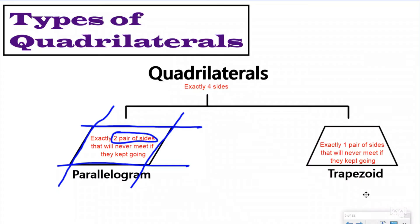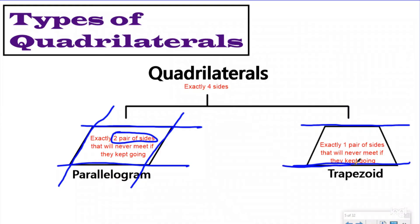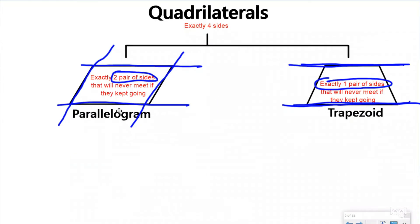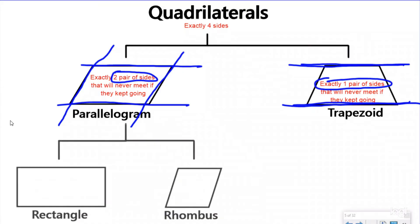A trapezoid has exactly one pair of parallel sides. Looking at the opposite sides of a trapezoid, one pair would eventually touch if they kept going — so they are not parallel. But the other pair of sides would never meet if they continued on forever. So a trapezoid has exactly one pair and a parallelogram has exactly two pairs of parallel sides. There are no other types of trapezoids, but there are different types of parallelograms.